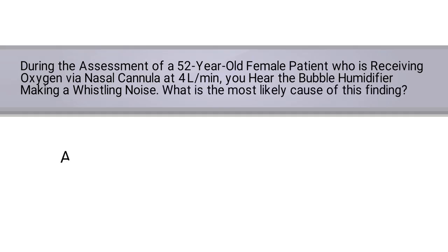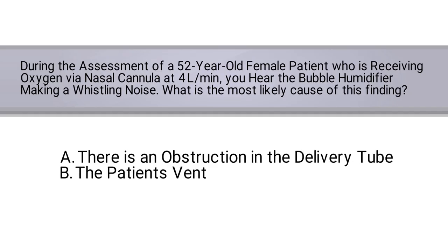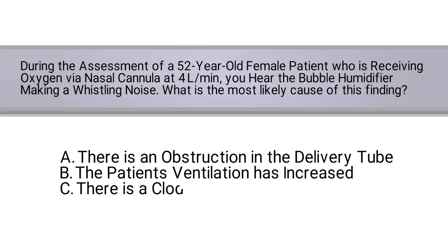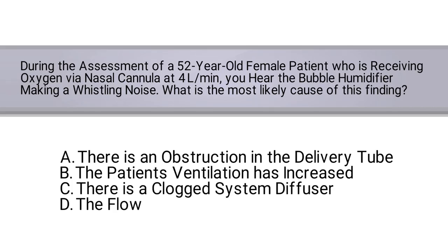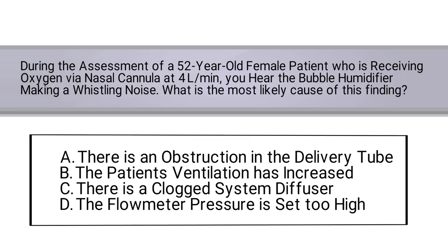A: There is an obstruction in the delivery tube. B: The patient's ventilation has increased. C: There is a clogged system diffuser. Or D: The flow meter pressure is too high. Do you know the answer? Well, let's break it down.